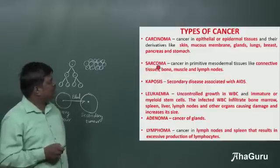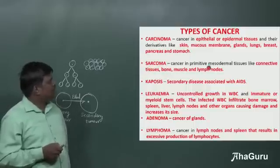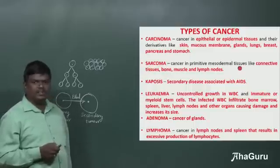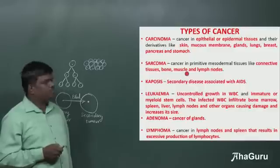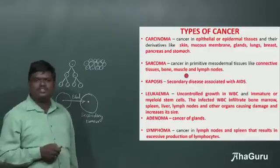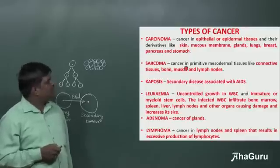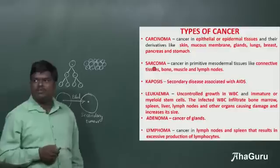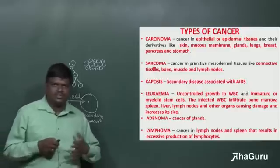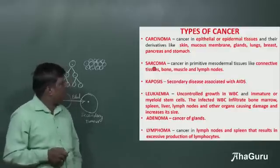Next is sarcoma. It is seen in connective tissues like bones and muscles, and lymph nodes. That is called sarcoma.